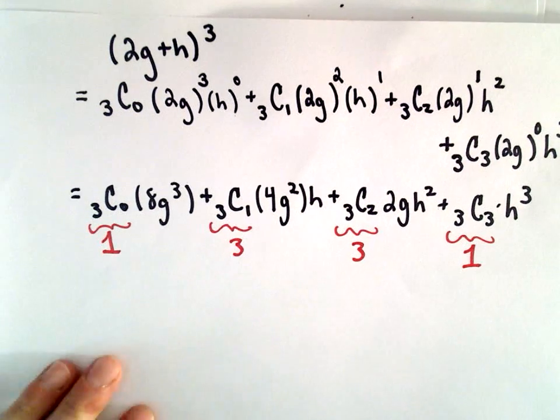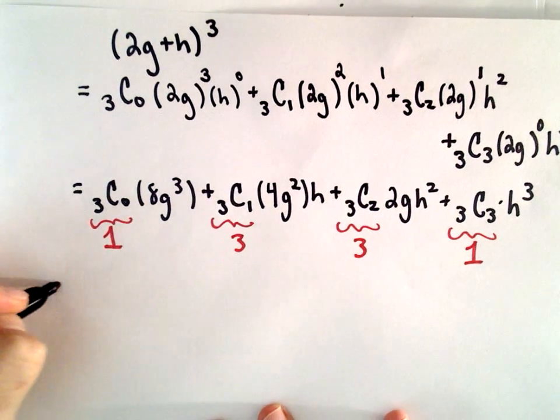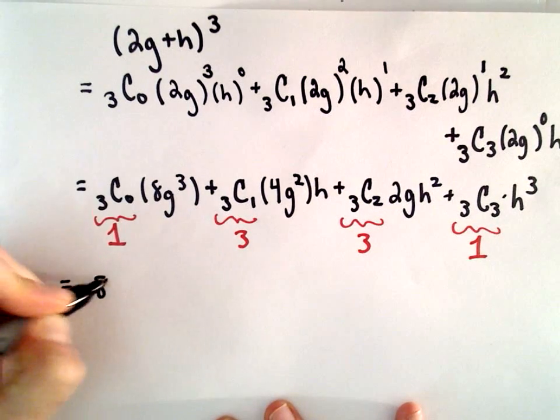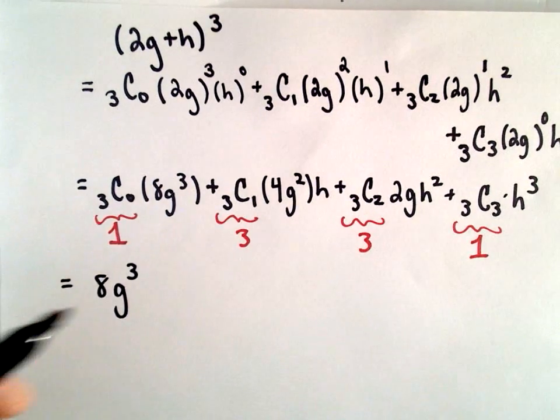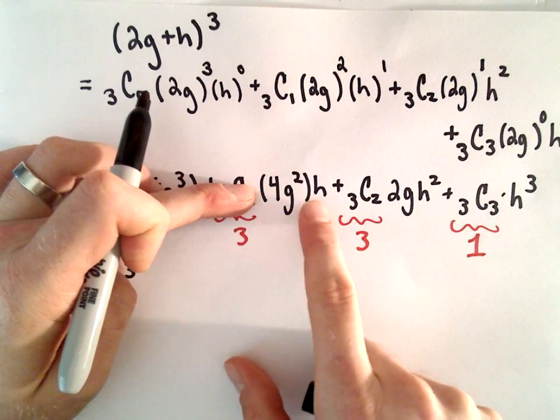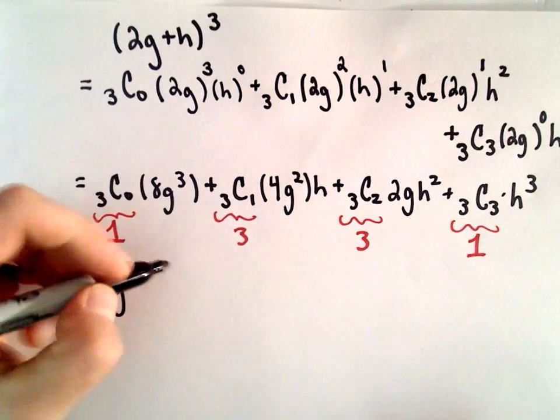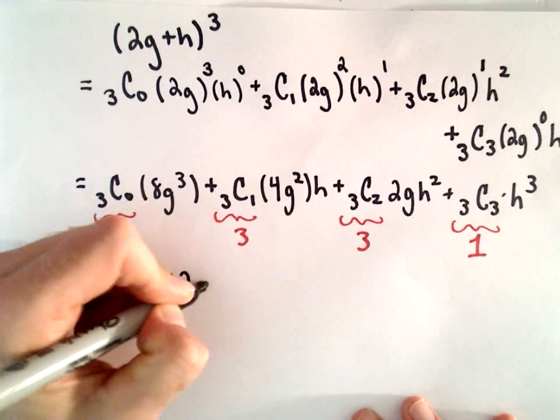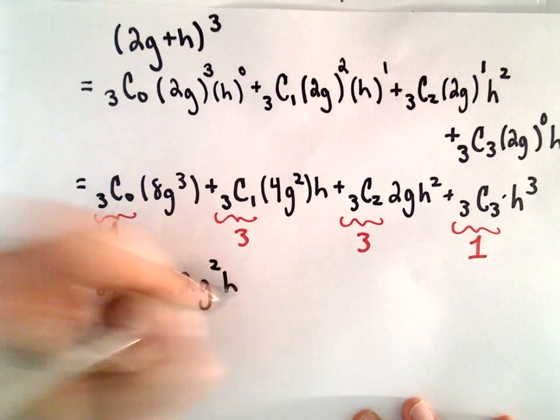And after that, it's just a matter of simplification. So we would have 1 multiplied by 8g to the third. We would have 3 multiplied by 4g squared times h. Well, 3 times 4 will be 12. We've got g squared multiplied by h.